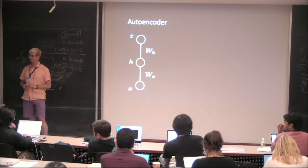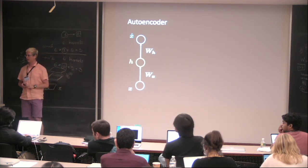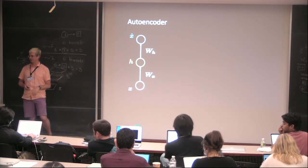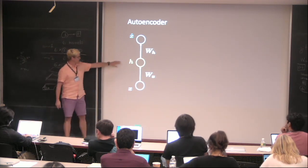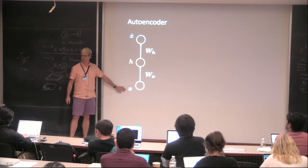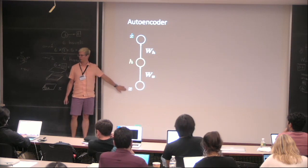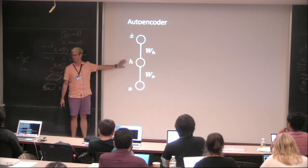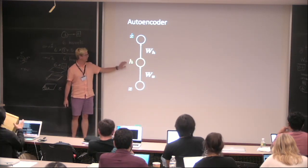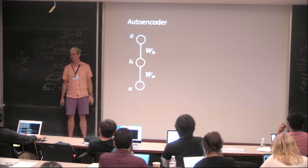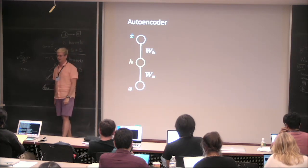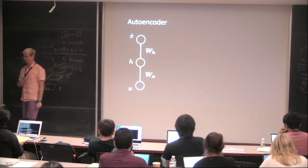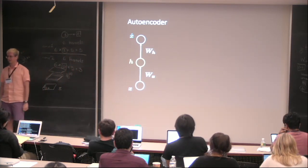So H has potentially lower dimensionality than X. You have to be smart in how you encode it, because you have less capacity to represent the input. Then you try to get back to the same input. More details in a few slides.